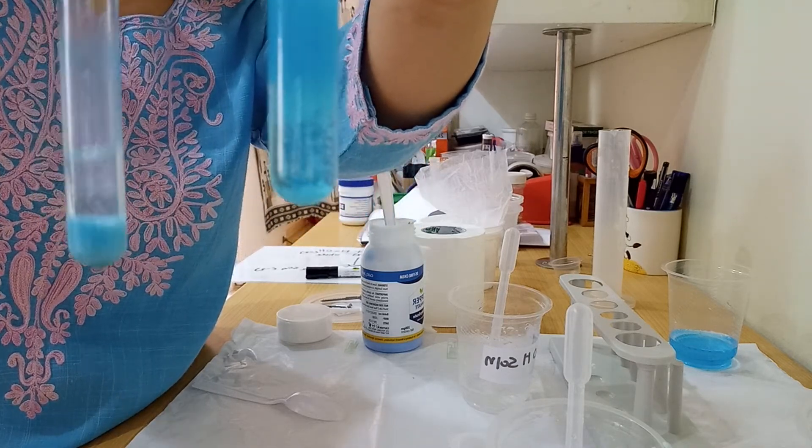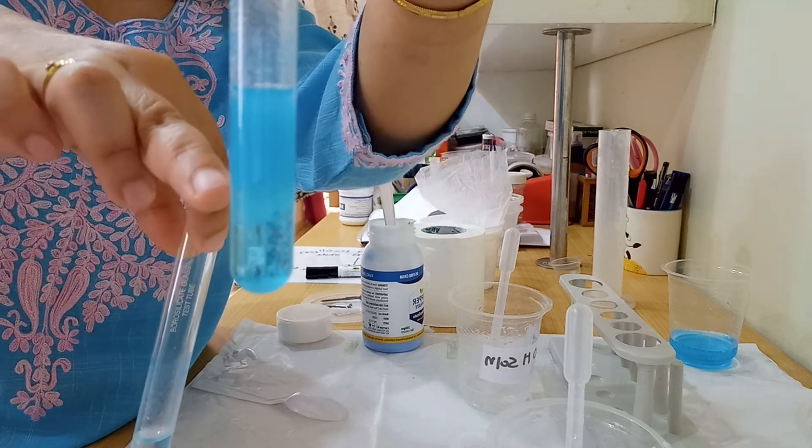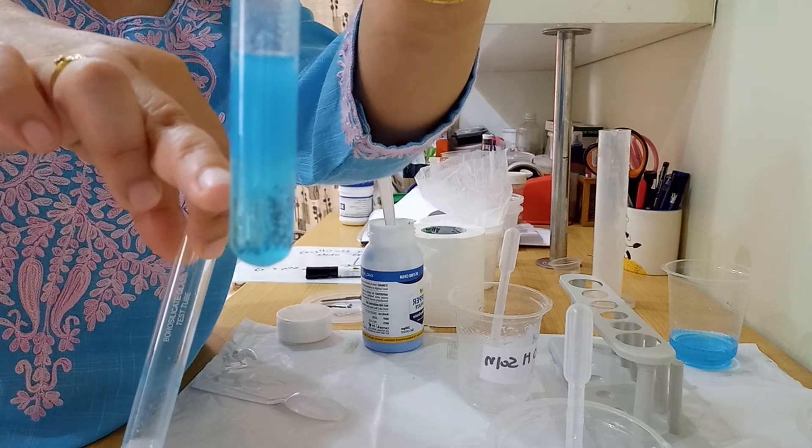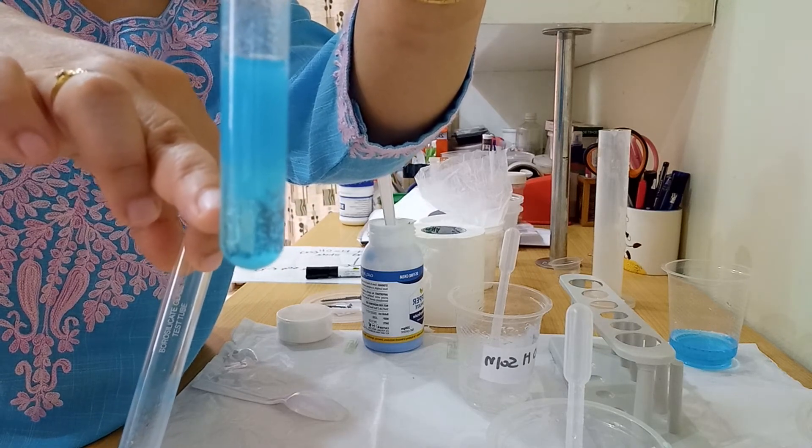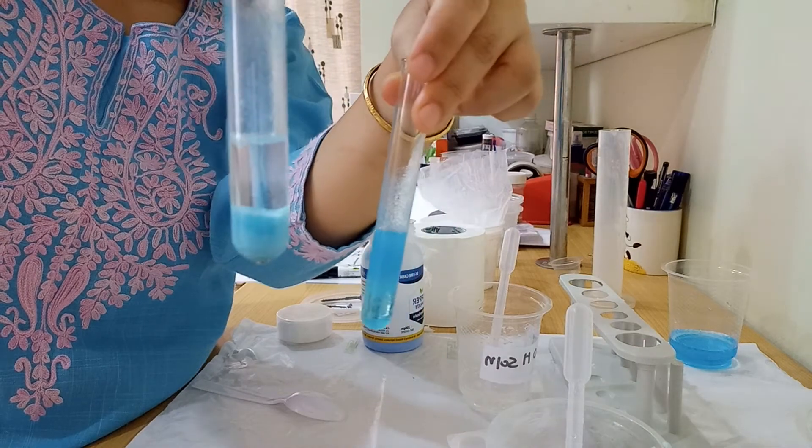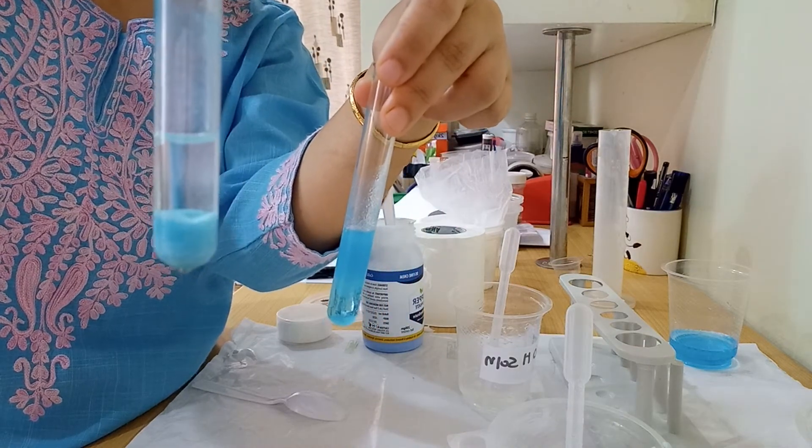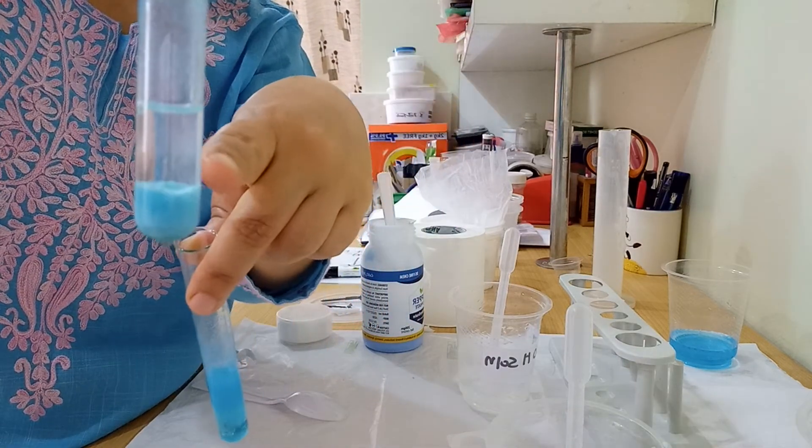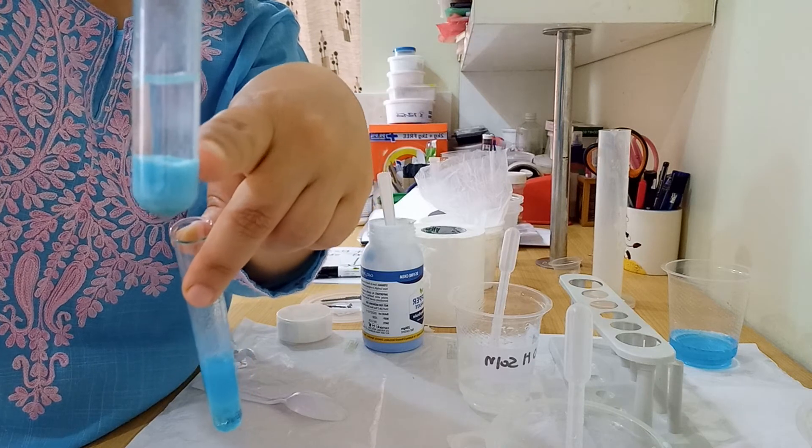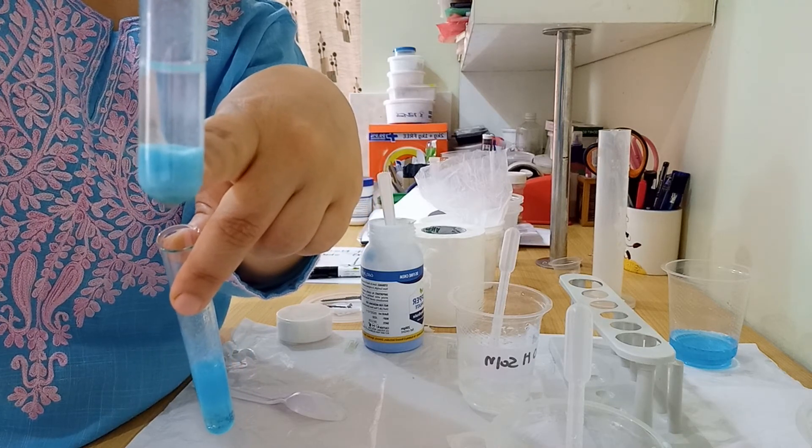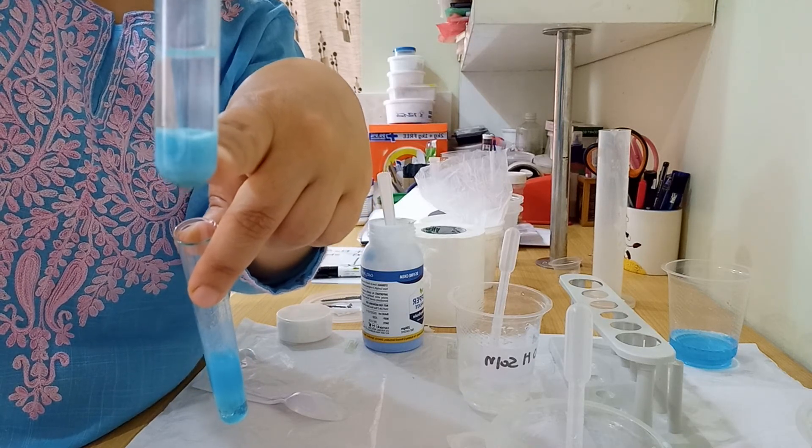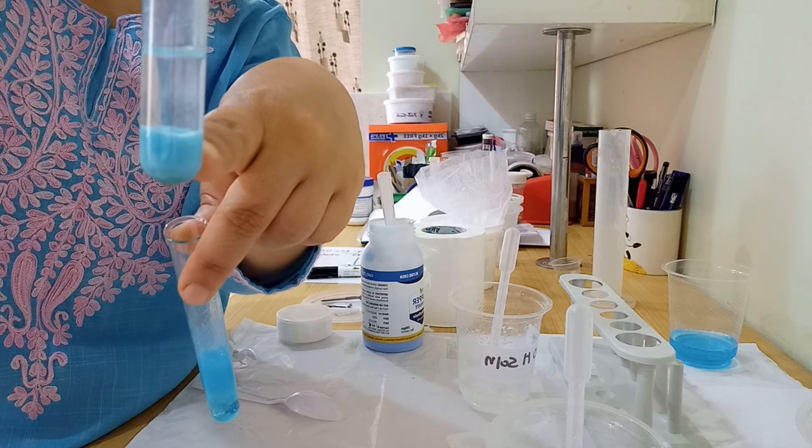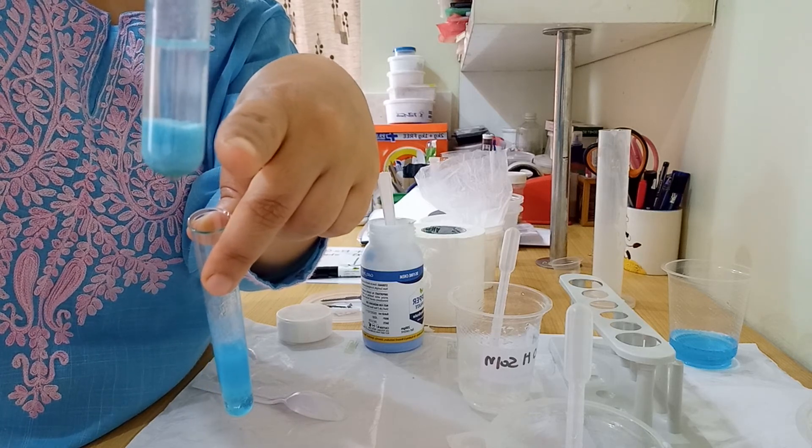You can see the experiment I just performed in front of you - the precipitate is slowly settling down. This one I did a few minutes before, and the precipitate has already settled. This is the copper hydroxide precipitate, which has a whitish-bluish color. Thank you for watching this video.